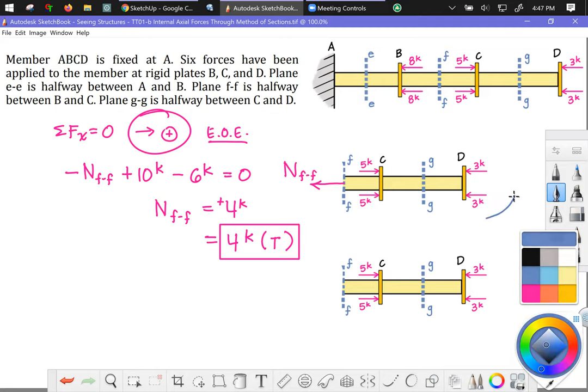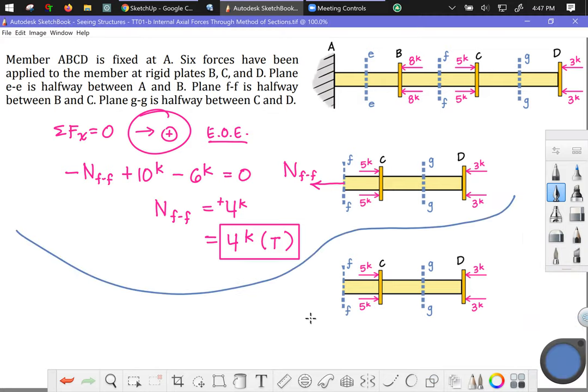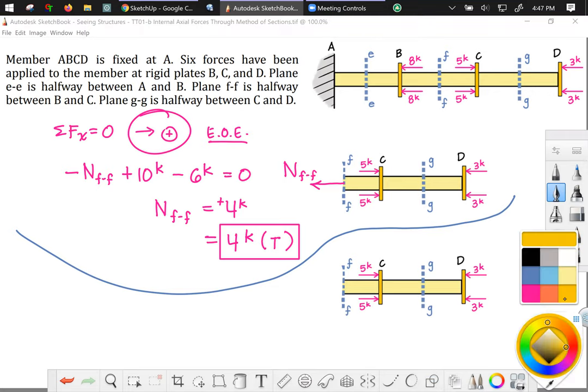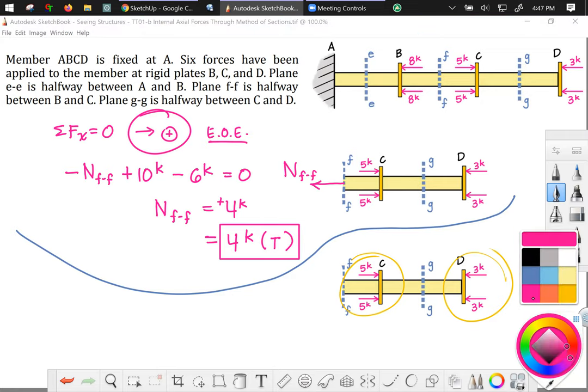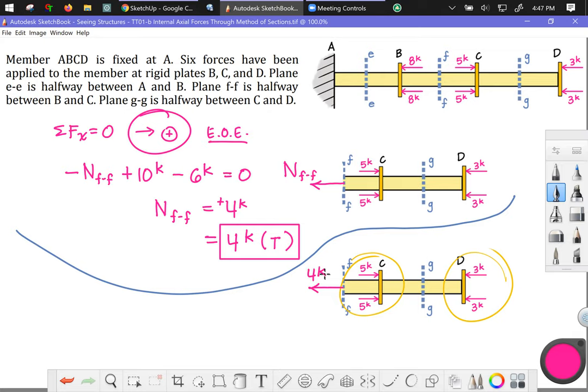All right, here's the fast way. You cut the free body and you ask yourself, what do I need at F-F to keep this in equilibrium? And so you think, okay, I got 10 kips to the right. I've got six kips to the left. I need four more kips to the left for equilibrium. So for equilibrium, I need a vector pointing to the left or in the negative x direction, magnitude four kips. And then to report that answer, we note that the arrow points away from the body. Therefore, that is tension or positive. Report that as positive four kips or four kips of tension like that.